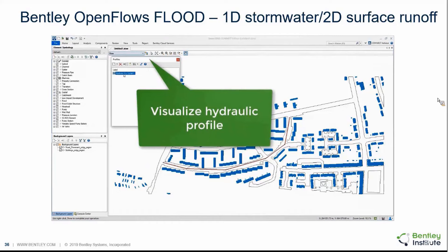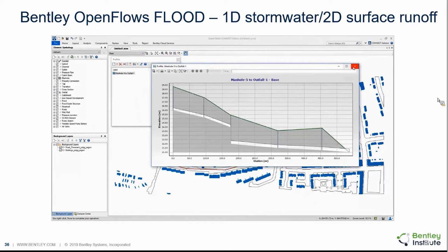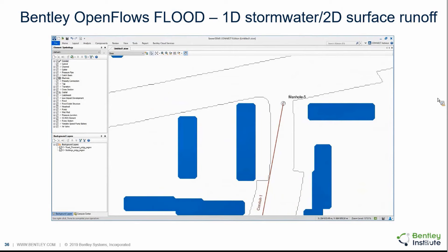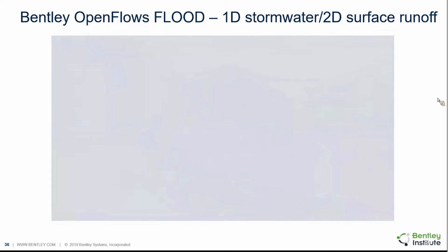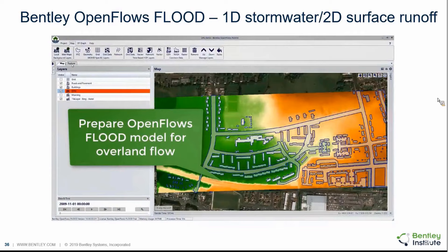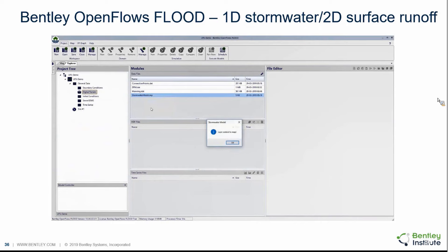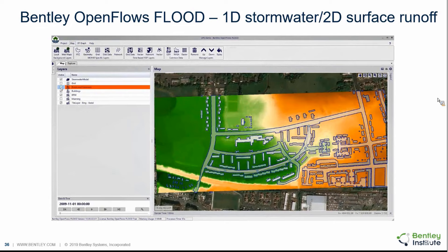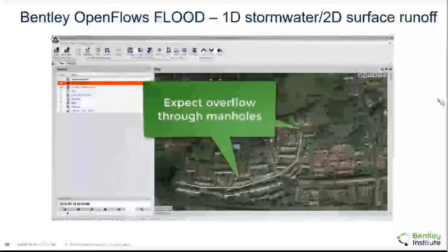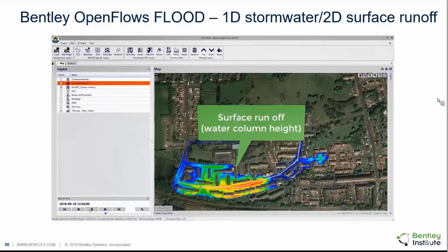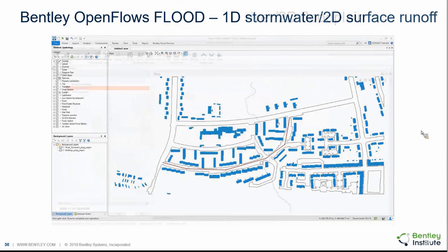We can couple OpenFlows Flood with 1D stormwater models like SewerGEMS. For example, in a SewerGEMS network we can define properties for each manhole and some inflows. We then load the 1D stormwater model constructed in SewerGEMS directly into OpenFlows Flood, prepare OpenFlows Flood for the overland flow simulation, and run them coupled in runtime. We can see the stormwater network and, from the inflows defined in SewerGEMS, expect overflow in the manholes and then flooding on the streets.